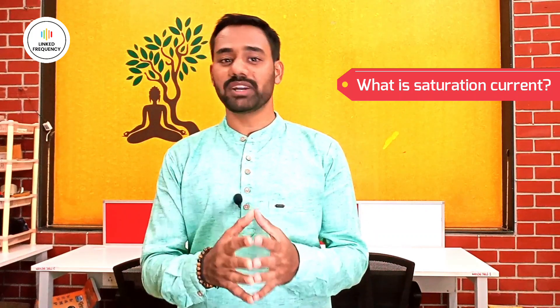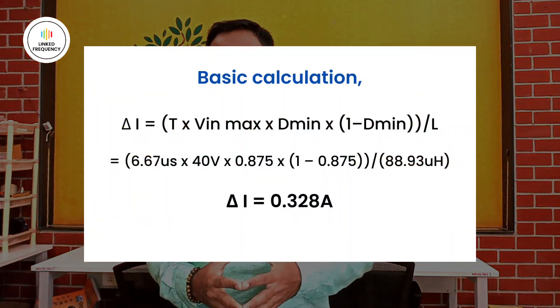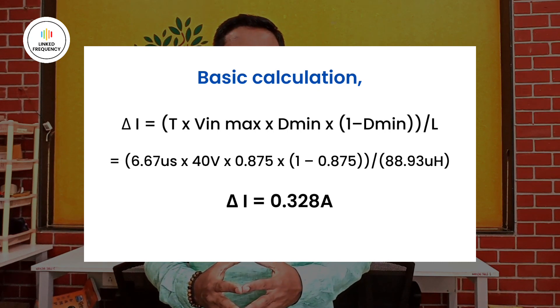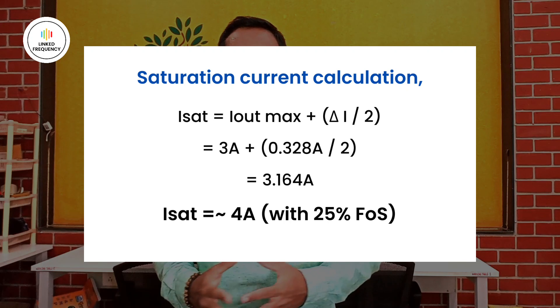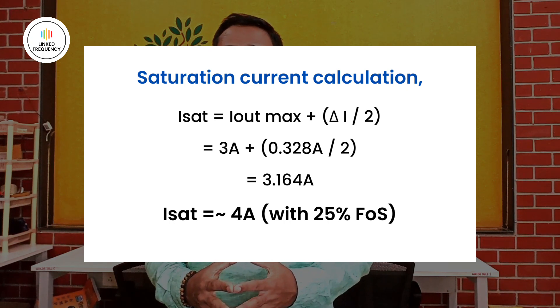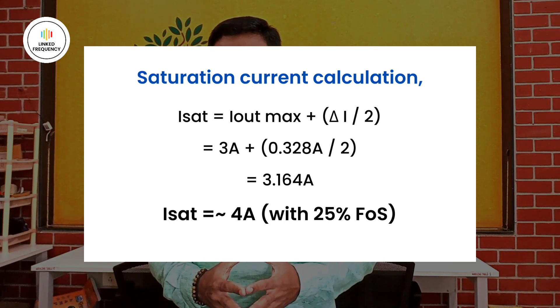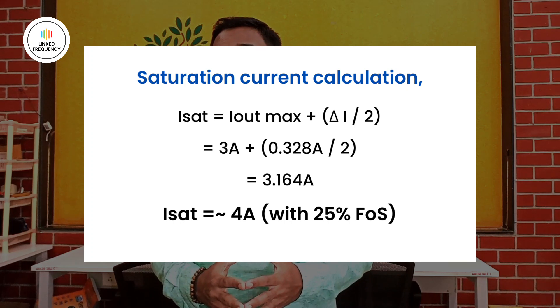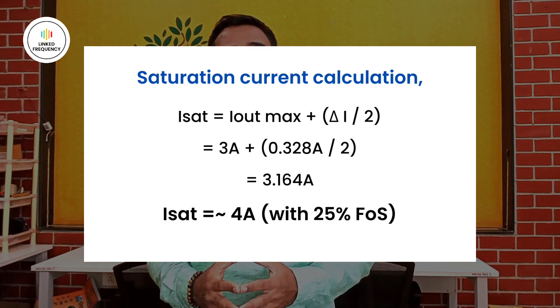For this inductor, we also calculate the saturation current. Saturation current is the maximum amount of current that can be stored in the core material, beyond which there is no possibility of storing a magnetic field. First we calculate delta I using a straightforward formula, which gives us 0.328 A. Then the saturation current I_sat = I_out_max + (delta I / 2), which gives 3.164 A. Applying a 25% safety factor, we end up with approximately 4 A as the final saturation current.